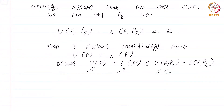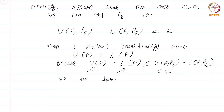So what we have shown is U(f) and L(f) can be made epsilon close. Hence by a theorem we proved back in week 2, since U(f) minus L(f) is less than epsilon, we are done. This was a rather simple criteria — it just rephrases the fact that U(f) equals L(f) in a slightly different language.